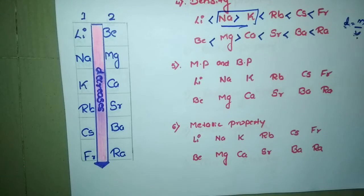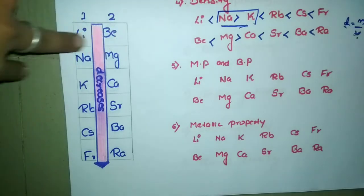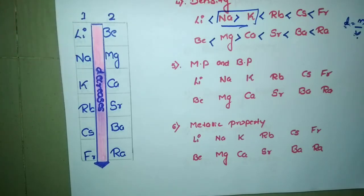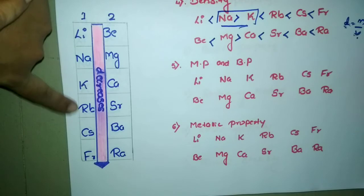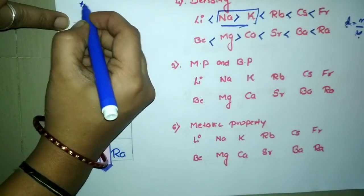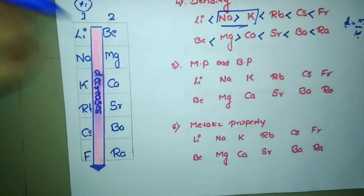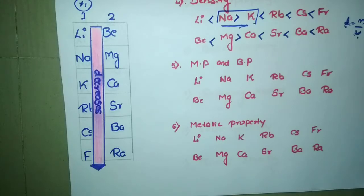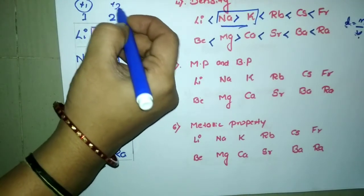Comparing group 1 and group 2: group 1 elements — lithium, sodium, potassium, rubidium, cesium, and francium — all have a +1 charge, meaning there is a weak metallic bond between the nucleus and the outermost electron, since only one valency electron is present. A weak metallic bond means the bond can be broken easily by applying less temperature, resulting in lower melting and boiling points for group 1.